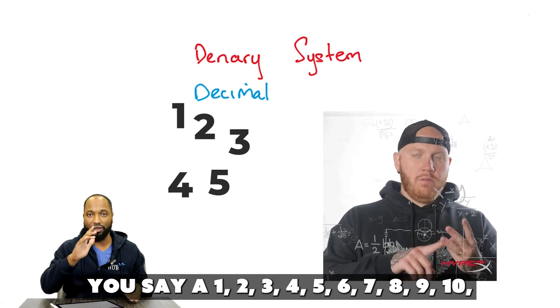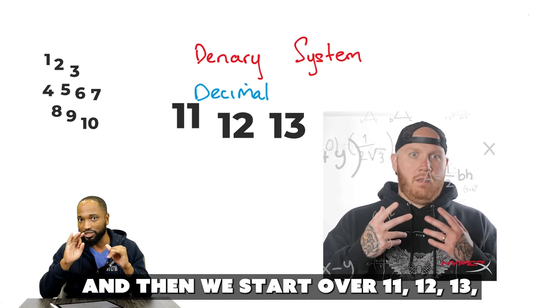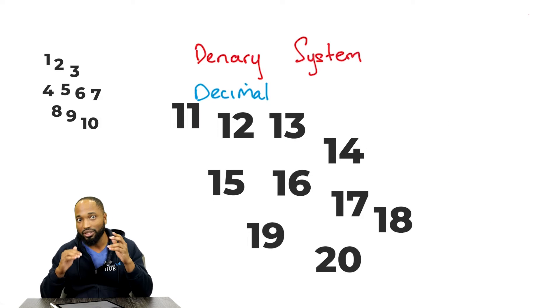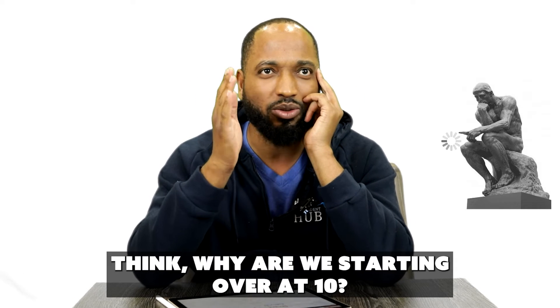You say 1, 2, 3, 4, 5, 6, 7, 8, 9, 10. And then we start over 11, 12, 13, 14, 15, 16, 17, 18, 19, 20. Have you ever stopped to think, why are we starting over at 10?